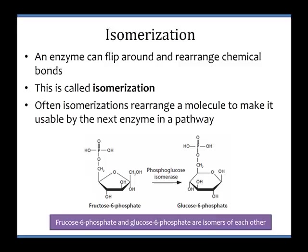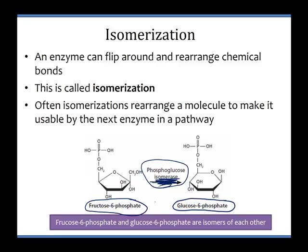Our last type of chemical reaction is isomerization. In an isomerization reaction, an enzyme can flip around and rearrange chemical bonds. You're not really adding or taking energy away, not adding or taking electrons away — you're just rearranging things. An isomer is a molecule that has the same number and type of atoms as another molecule, but a different arrangement. Here's an example: we take fructose 6-phosphate and convert it into glucose 6-phosphate through an isomerization reaction. This is one of the next steps in glycolysis. The enzyme that does this is phosphoglucose isomerase — it's in the name. Both fructose 6-phosphate and glucose 6-phosphate are isomers of each other, both with the phosphate group on carbon number 6.